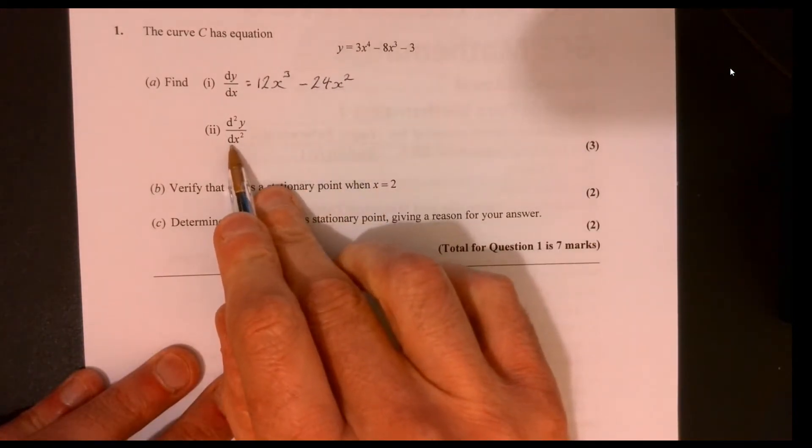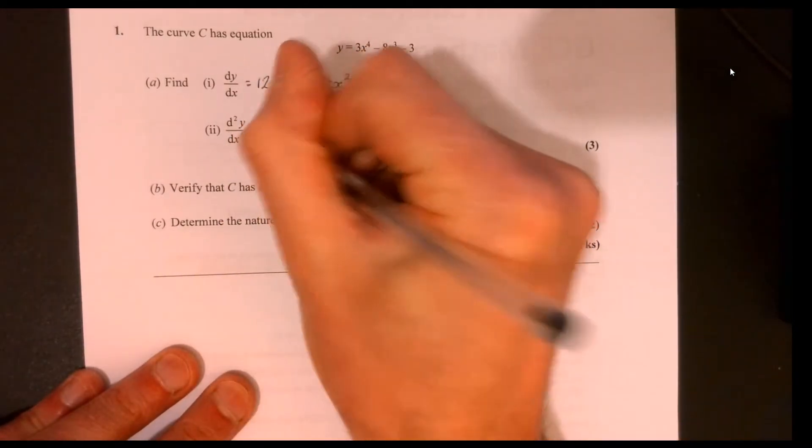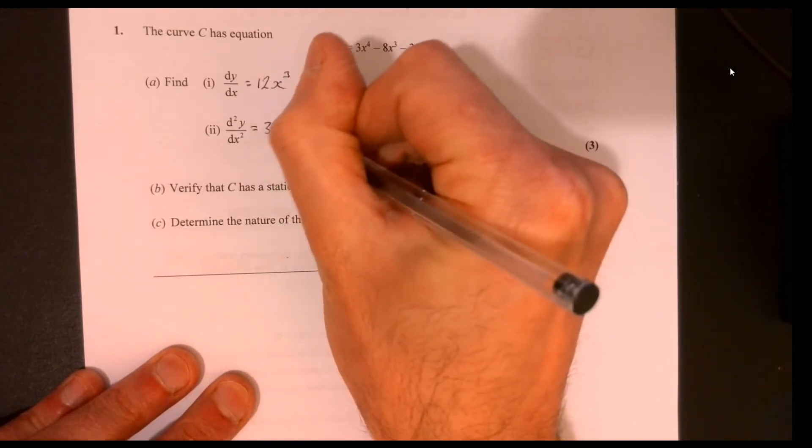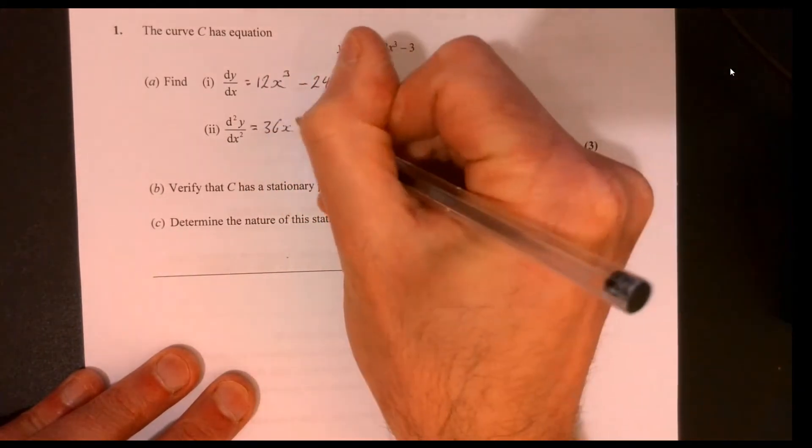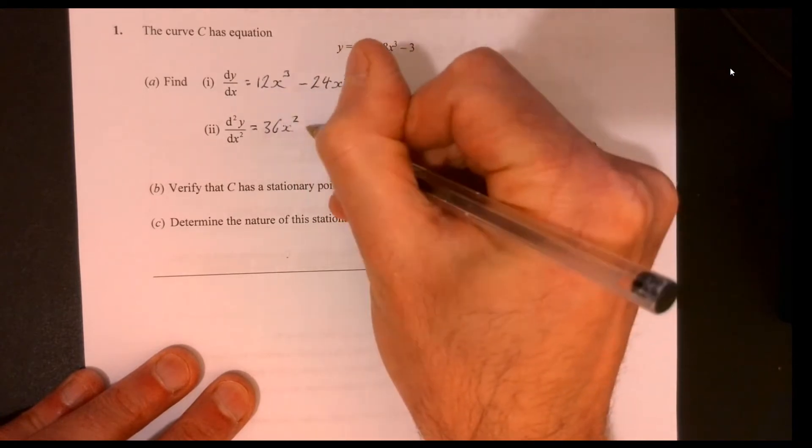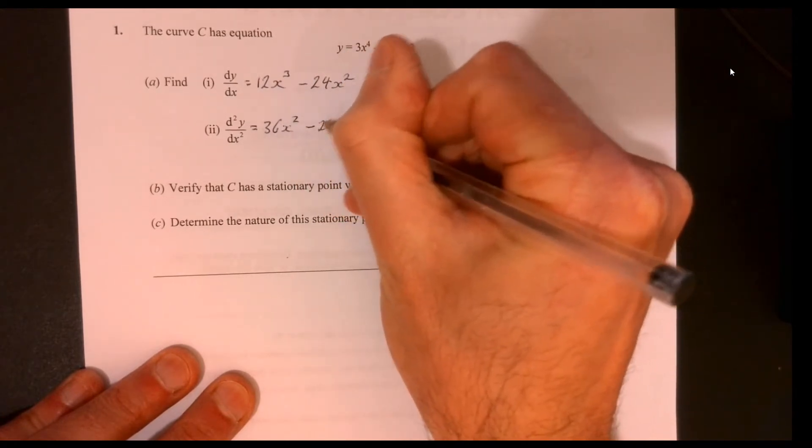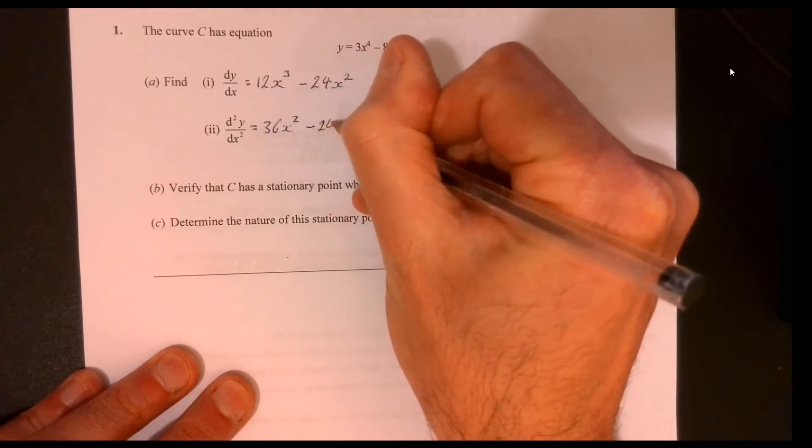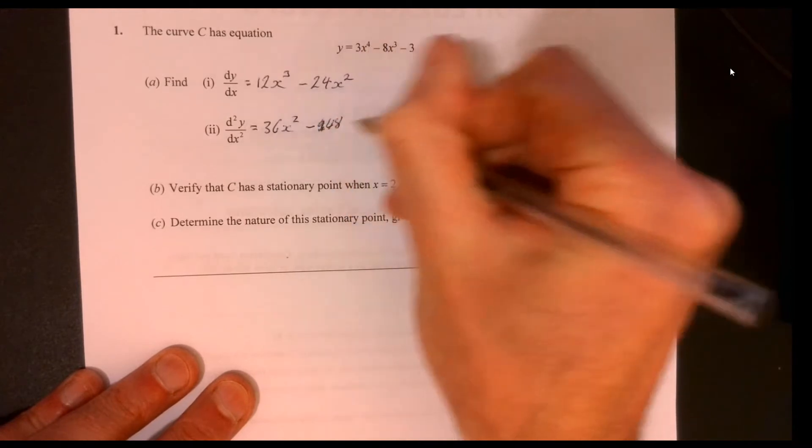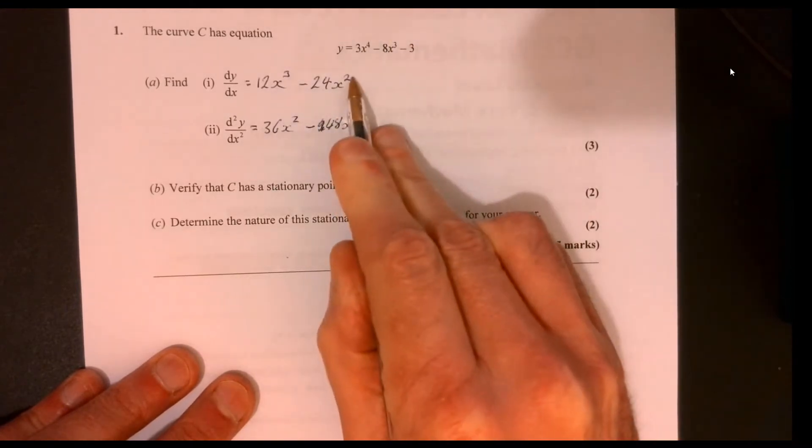Just differentiate again. 3 times 12, lower the power by 1, and 2 times 24, which is 48, lower the power by 1.